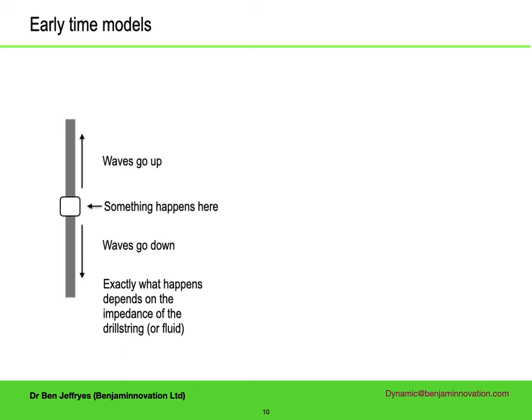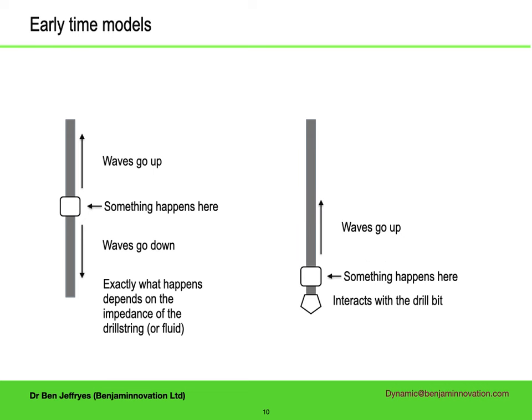An early-time model for a source of vibration in the middle of the drill string has the properties of the vibration source matched to the impedance of the drill string or fluid above and below. Most of the early-time models in these presentations look conceptually like a system where something happens very close to the bit and the two interact, as a result of which some dynamic effect goes up the drill string. That interaction can be quite complicated.